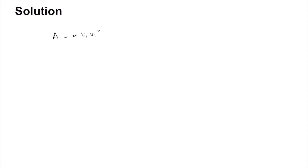We are given that A equals alpha·v1·v1ᵀ plus beta·v2·v2ᵀ, and we are given that v1ᵀv2 = 0, v1ᵀv1 = 1, and v2ᵀv2 = 1.